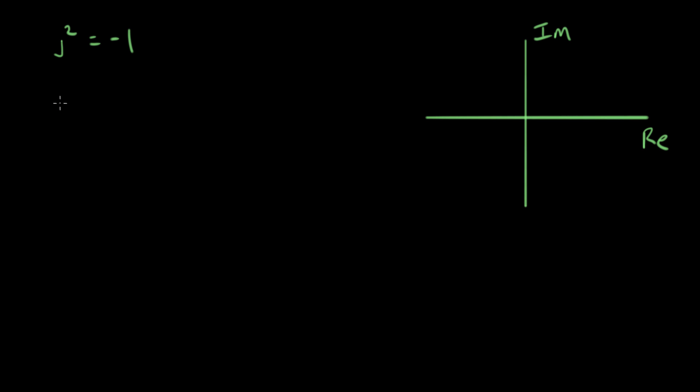So I'm gonna take powers of J. The first one is J to the zero, and anything to the zero is one. So J to the zero is one, and if we plot that, here's one, and there's no real part, so we're just right on the real axis.